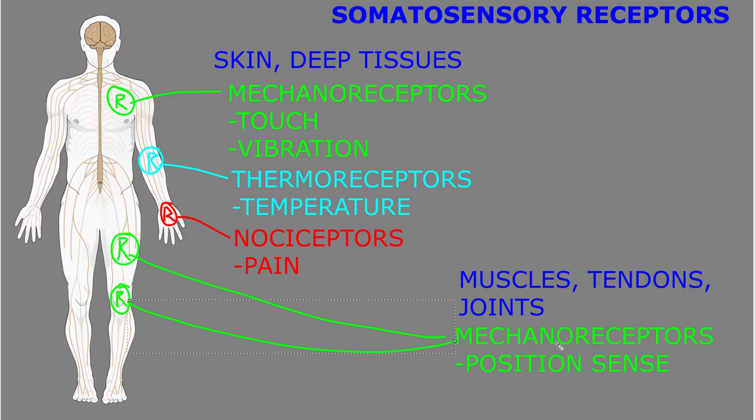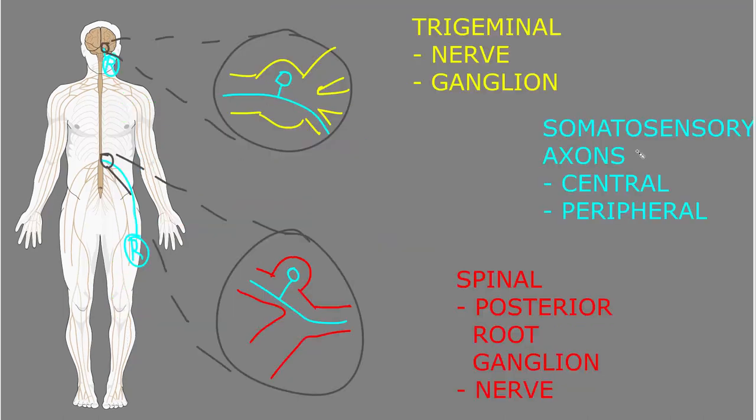So this is like if you close your eyes, you can still tell where your arms and your legs are. Somatosensory information travels along axons of neurons, which we call somatosensory axons.